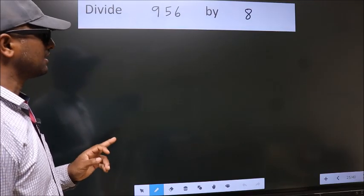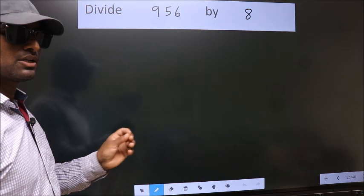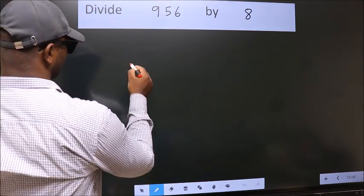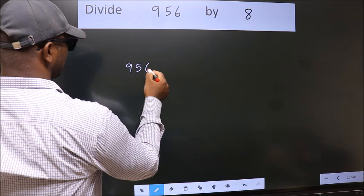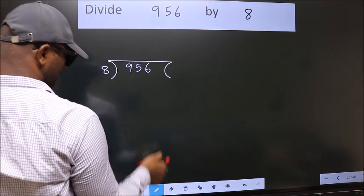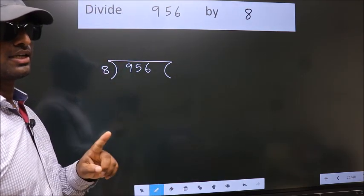Divide 956 by 8. To do this division, we should frame it in this way. 956 here, 8 here. This is your step 1.